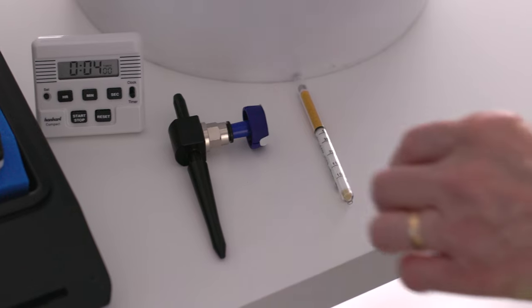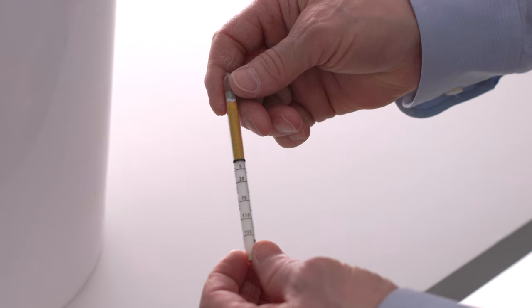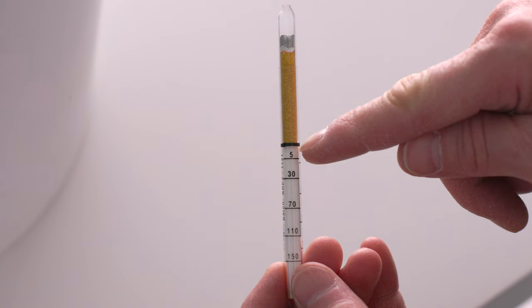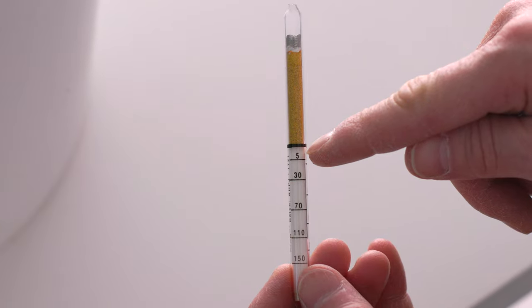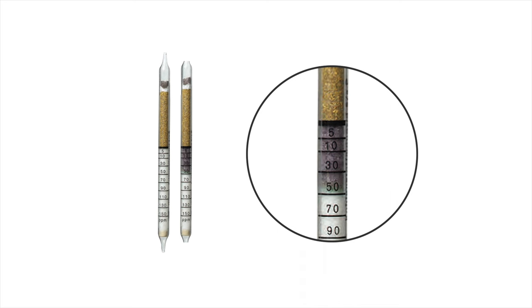Next look at the carbon monoxide tube. There is no discoloration visible on the indication layer of this tube. A positive indication for carbon monoxide would result in a light brownish discoloration with a light green front.